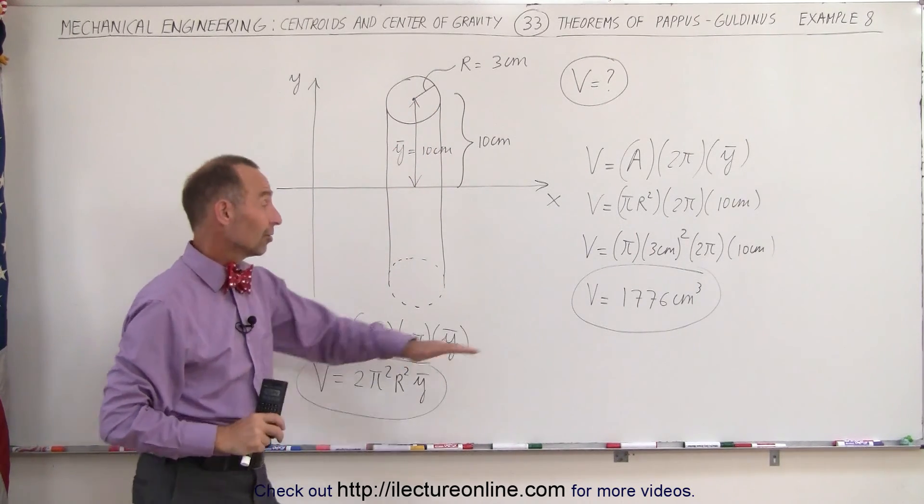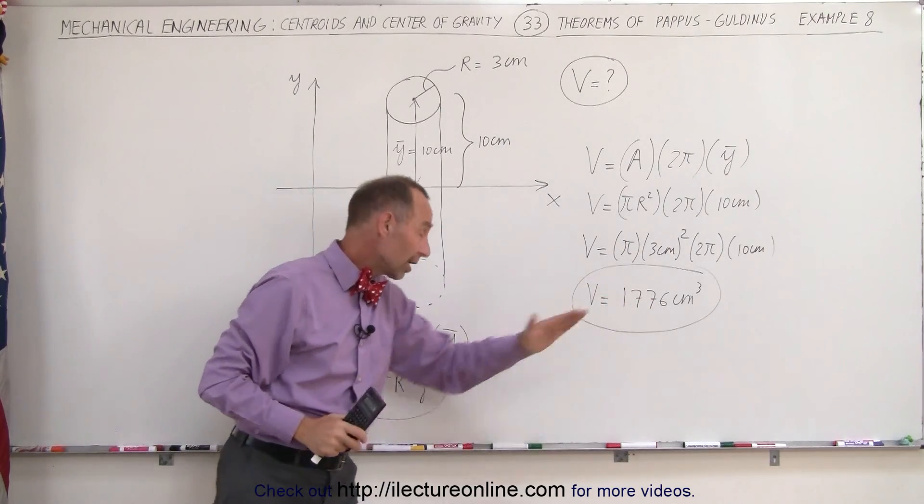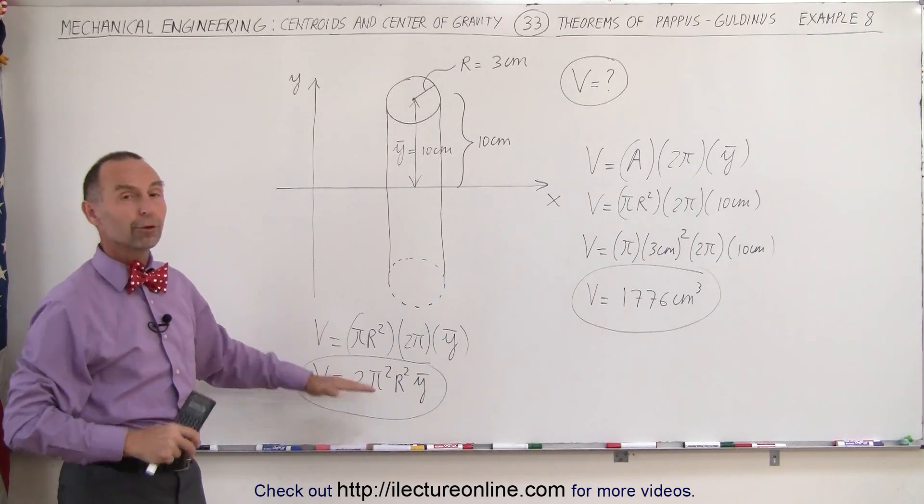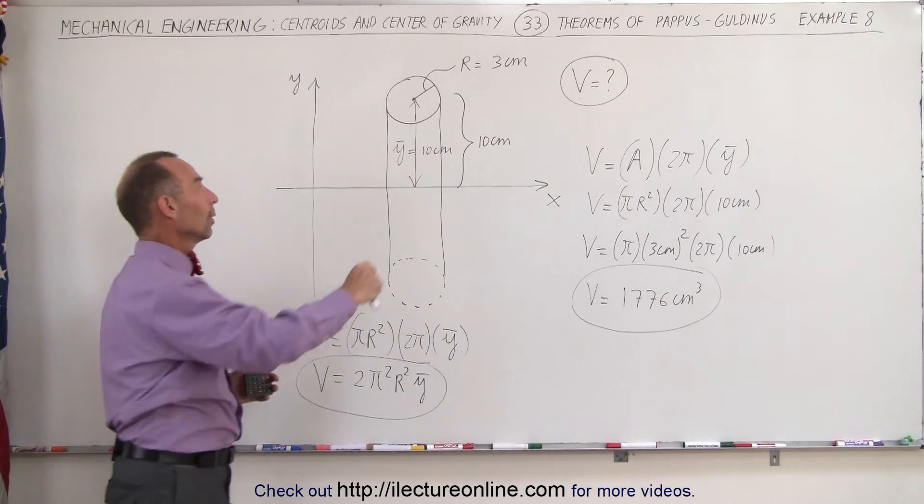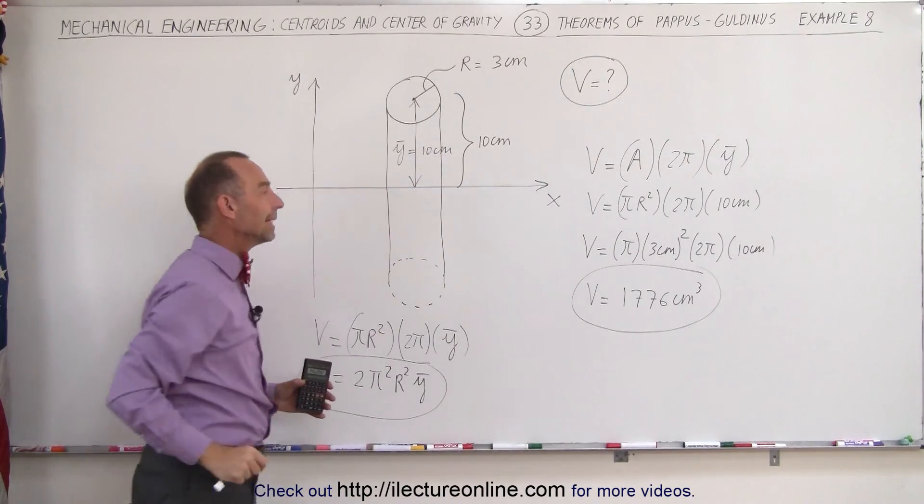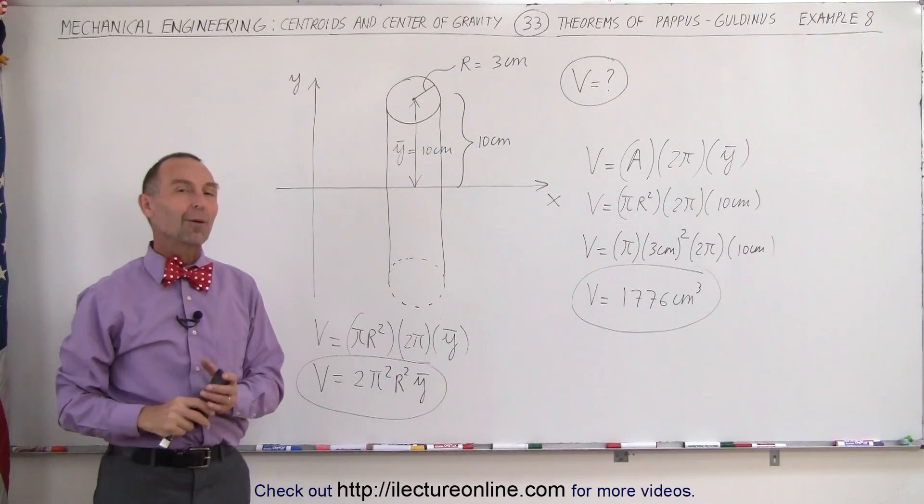So here's the numerical value, if you want to give that a try, and here's the general formula for a donut shaped object, where the centroid is a distance ȳ away from the x axis, and that's how we do that.